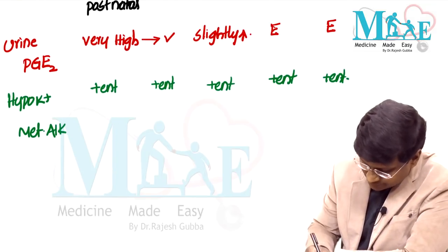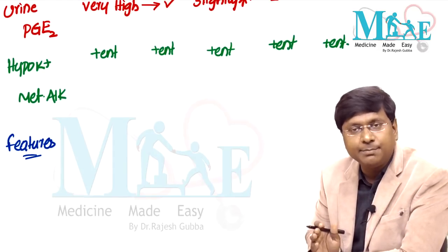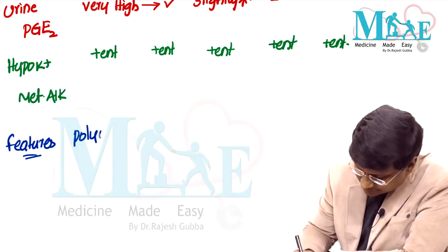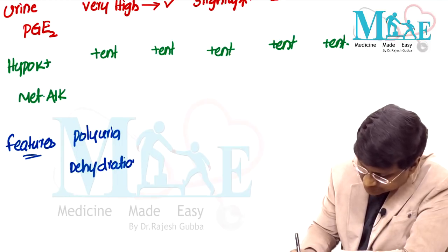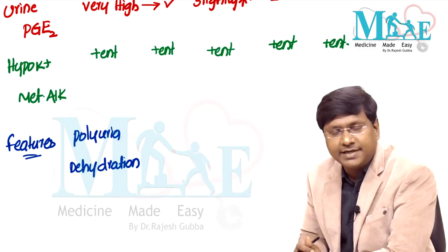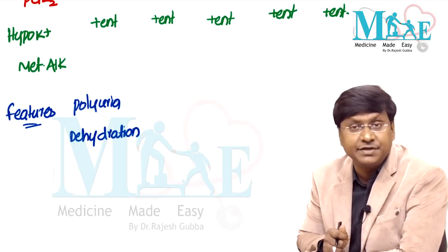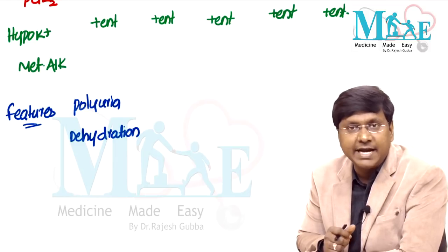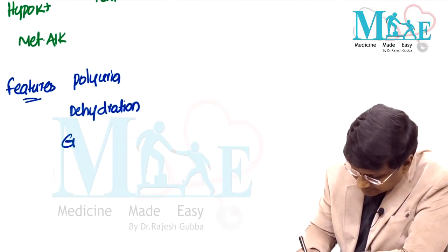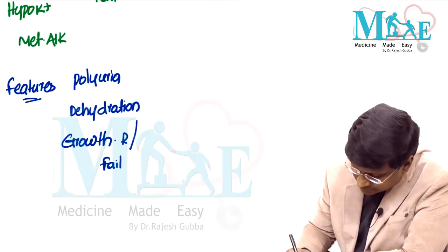Clinical features include polyuria, and because of polyuria, signs of dehydration including sunken anterior fontanel, decreased skin turgor, dry mouth, and dry mucous membranes. Water constitutes 70-80% of a newborn's body, so if adequate water and electrolytes are not present, these children suffer from growth retardation or failure to thrive.